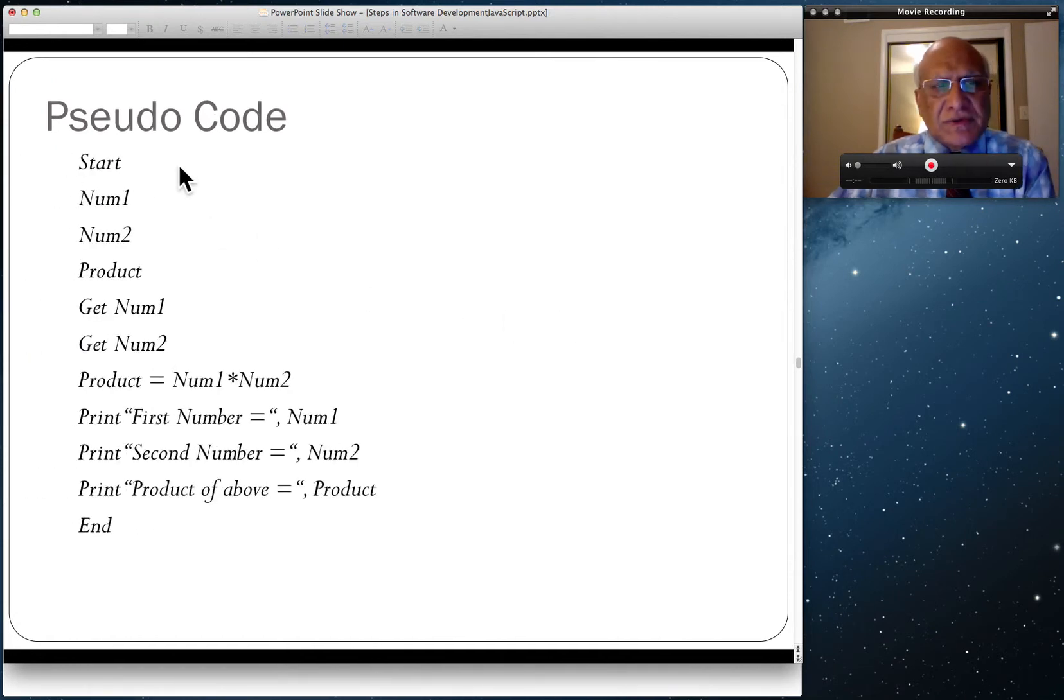This is the pseudocode for the flowchart we saw earlier. It started the same as in the flowchart. Inside the preparation symbol we had Num1, Num2, and Product, so these three were inside the preparation symbol.